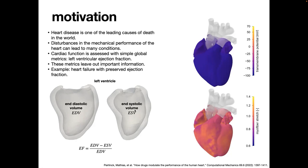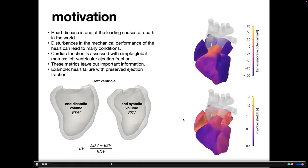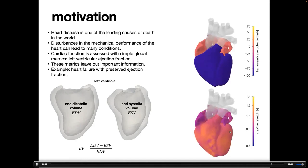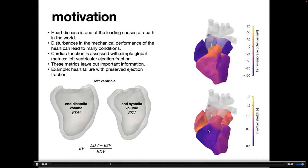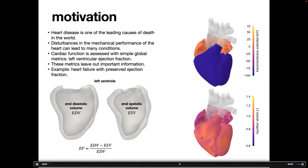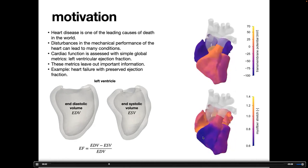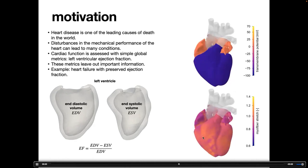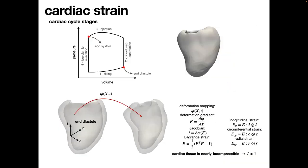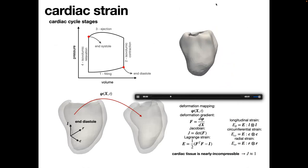Ejection fraction is a very simplistic metric, and there are diseases that cannot be detected with it. One example is heart failure with preserved ejection fraction — the ejection fraction doesn't change, but the heart is not working properly. If we look at simulations, we can see heterogeneous fiber stretch patterns, and we may use this information to identify different diseases.